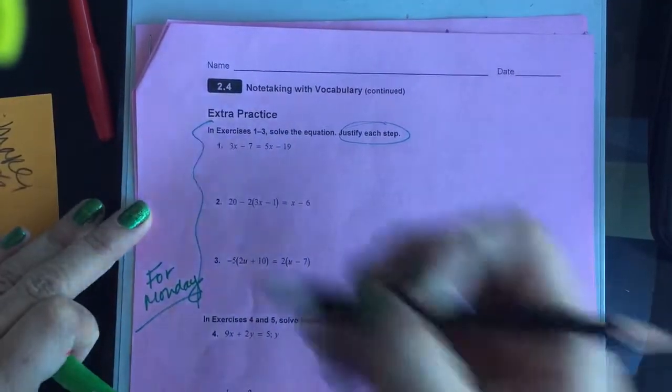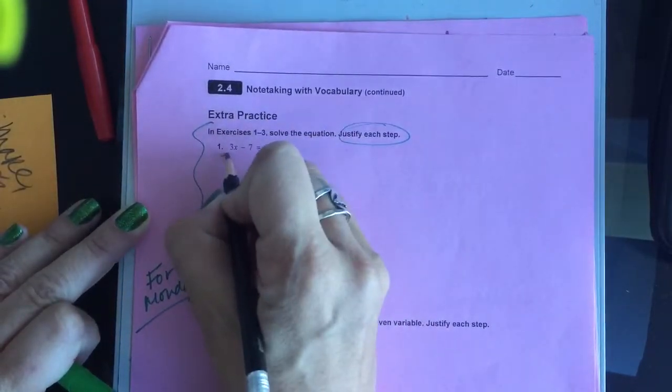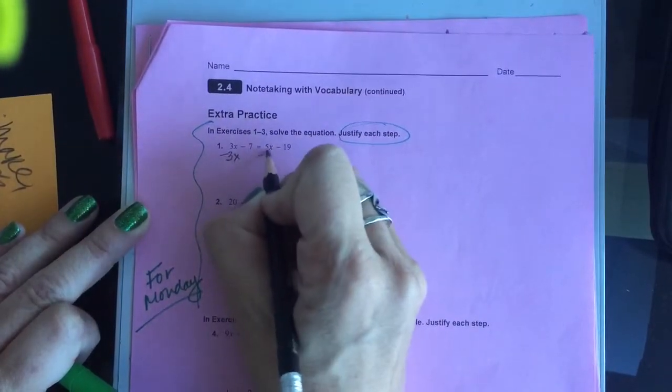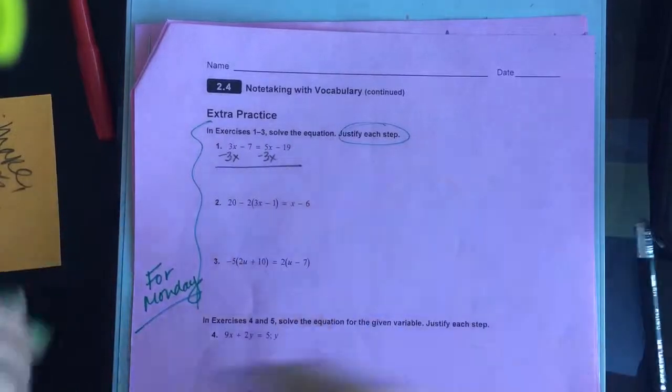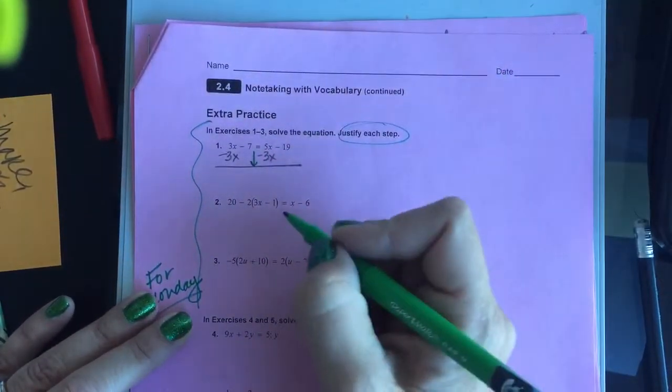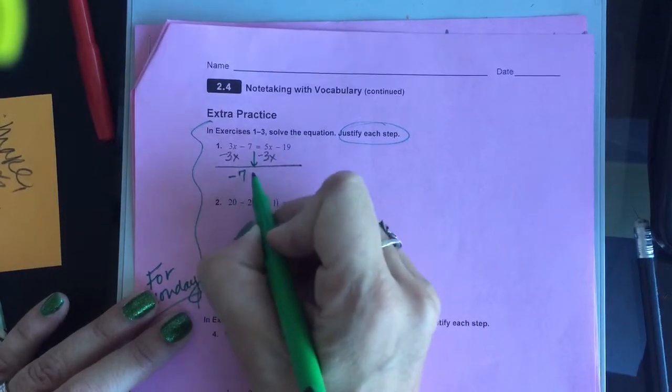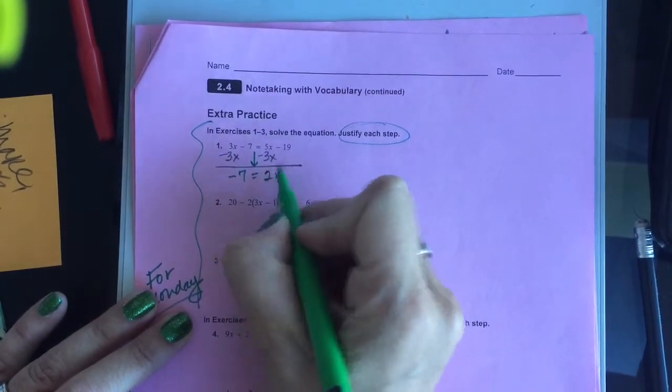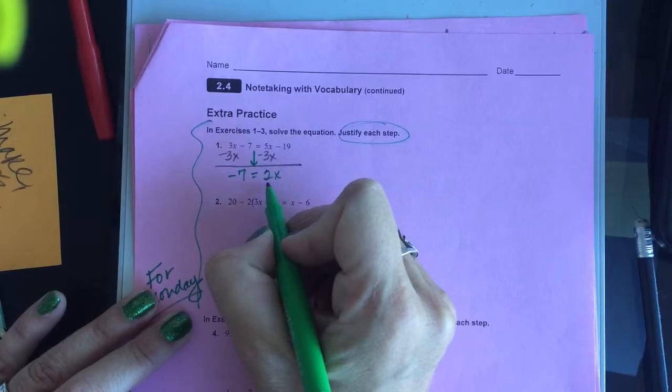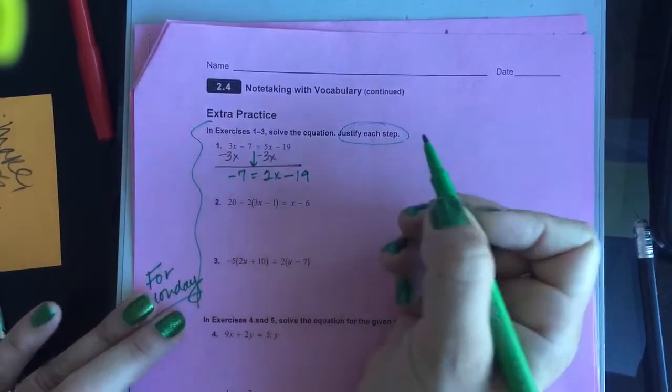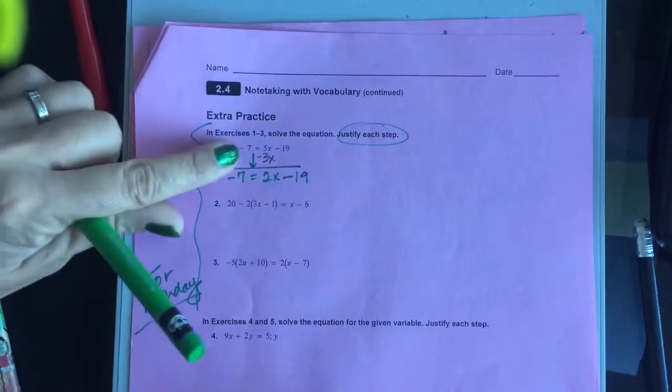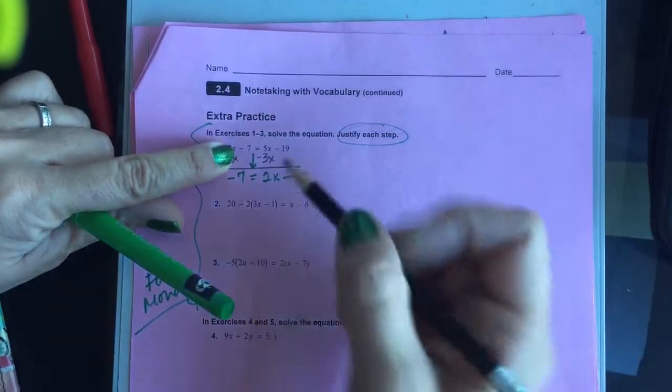My first step is I'm going to subtract 3x from both sides, and I'm just going to remind you of some of the stuff that I talked about on Friday. When I have options for solving, I try to get the variable to have a positive coefficient. 5x minus 3x is going to leave me with a positive 2x, and the other thing that I want you to be careful of is watching to make sure you don't leave a negative sign behind.